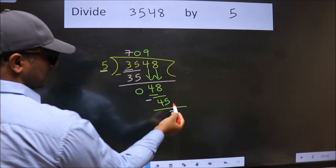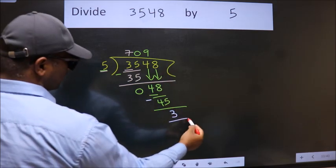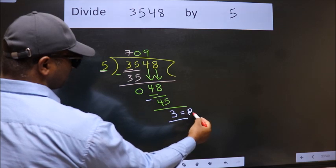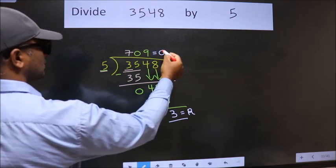No more numbers to bring down. So we stop here. This is our remainder. This is our quotient.